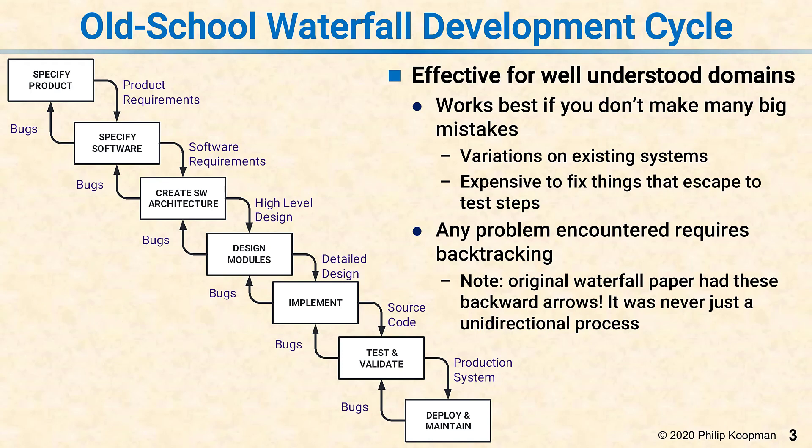The original waterfall paper had backward arrows for bugs. So it's not that you're not able to make changes — it's simply that going back to make changes is pretty expensive.